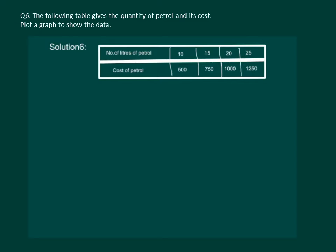Let us read the question. The following table gives the quantity of petrol and its cost. Plot a graph to show the data. Here we notice that the number of litres of petrol we buy will change the cost of the petrol. Hence, number of litres of petrol is an independent variable, while cost of the petrol is a dependent variable, as it will vary with the number of litres of petrol.